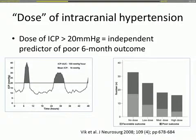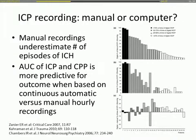Just being above a certain value is not enough — it's also the dose of intracranial hypertension. You can calculate the dose as the area under the curve of all measurements above 20 mmHg. Clearly, the higher the dose, the higher the proportion of patients with poor outcome. Papers based on manual recordings actually underestimate the number of episodes. With computer recordings stored minute by minute, the AUC of ICP and CPP from continuous recordings is even more predictive.